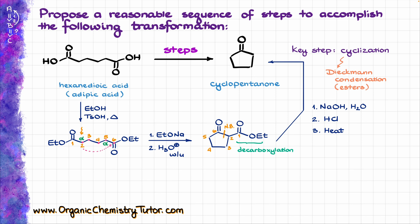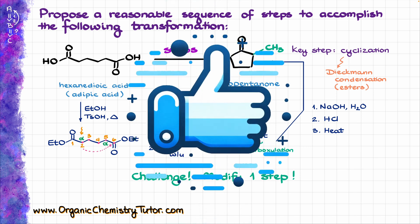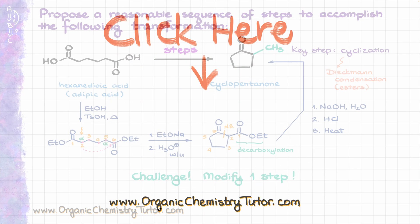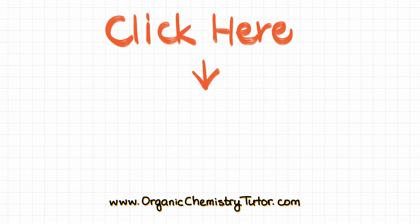As you can see, this is a fairly straightforward synthesis as long as you recognize that you need to do the Dieckmann condensation as your key step. I do have a challenge for you: how can you modify a single step in this synthesis and end up with that extra methyl group on the final product? Let me know what you're thinking in the comments below. As always, thank you for watching — if you learned something new today, hit that like button and subscribe for more. Check out this video next, and I'll see you next time.